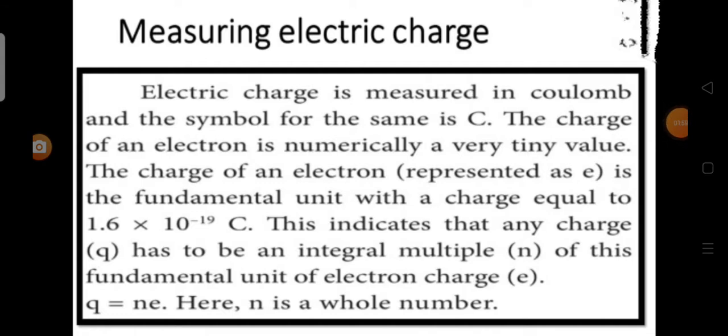Electric charge is measured in coulomb, and the symbol for this unit is capital C. The charge of an electron is numerically a very tiny value. The charge of an electron is the fundamental unit with a charge equal to 1.6 into 10 power minus 19 coulomb.